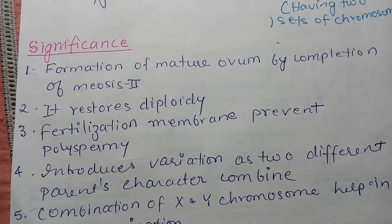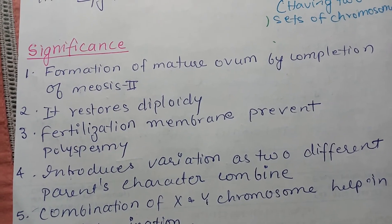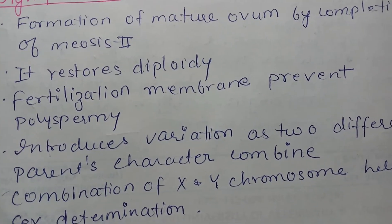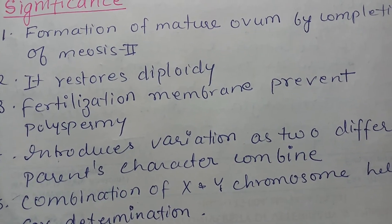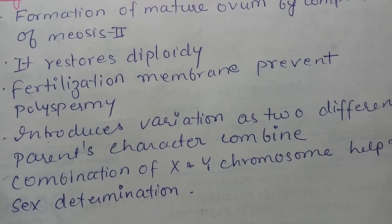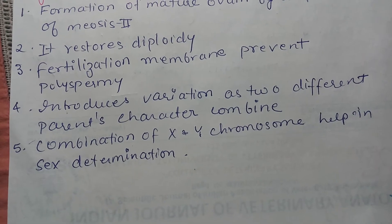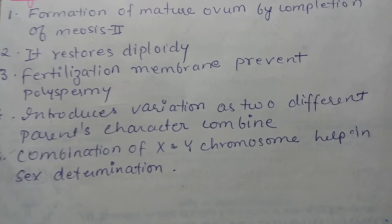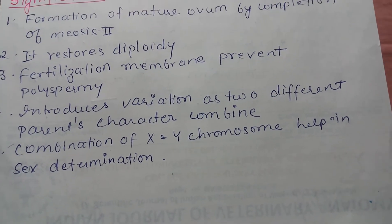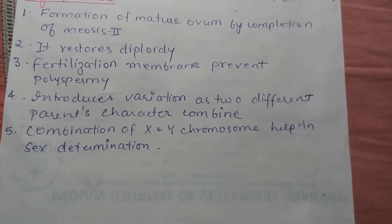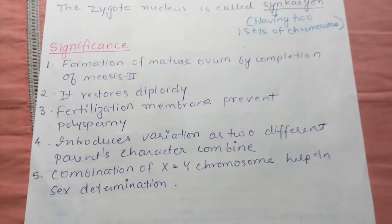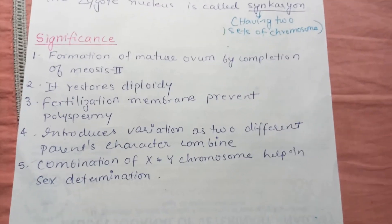The significance of fertilization includes: it results in formation of the mature ovum by completion of meiosis two; it helps restore diploidy; it prevents polyspermy; it introduces variation as two different parents' characters are combined; and the combination of X and Y chromosomes helps in sex determination. This is all about fertilization.